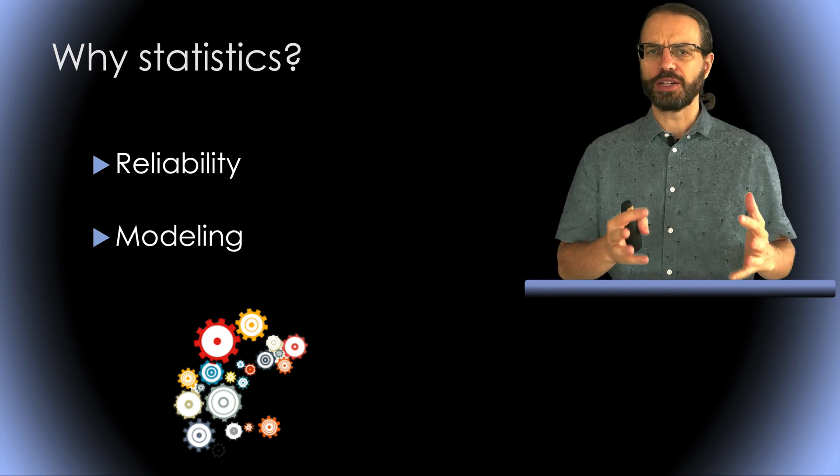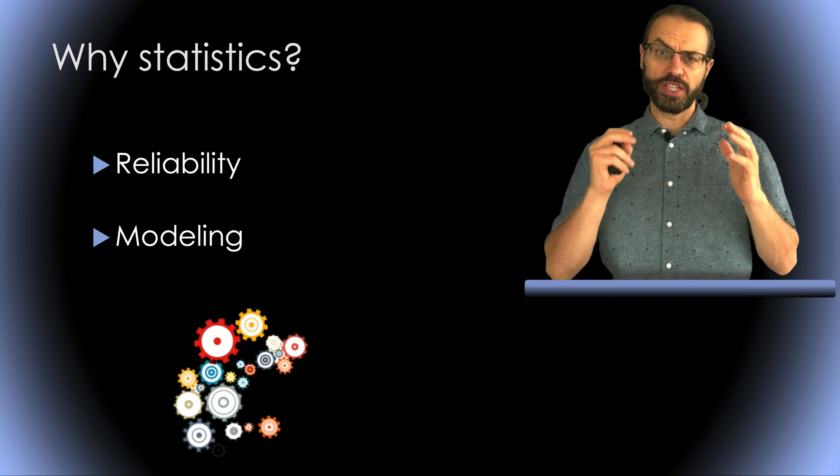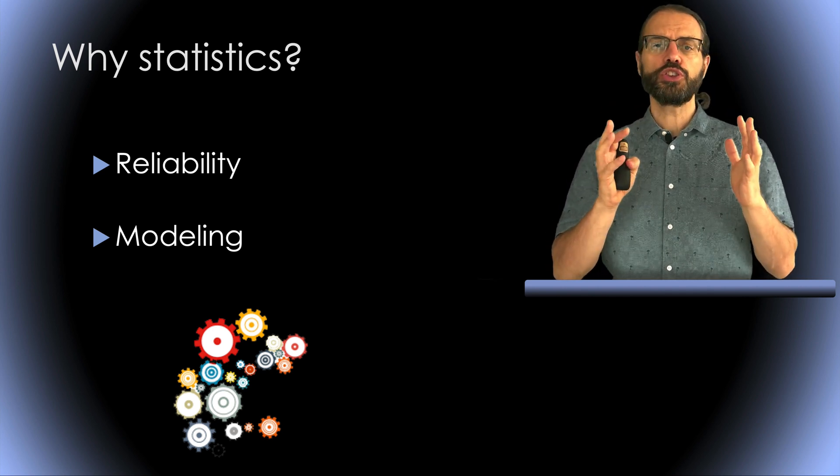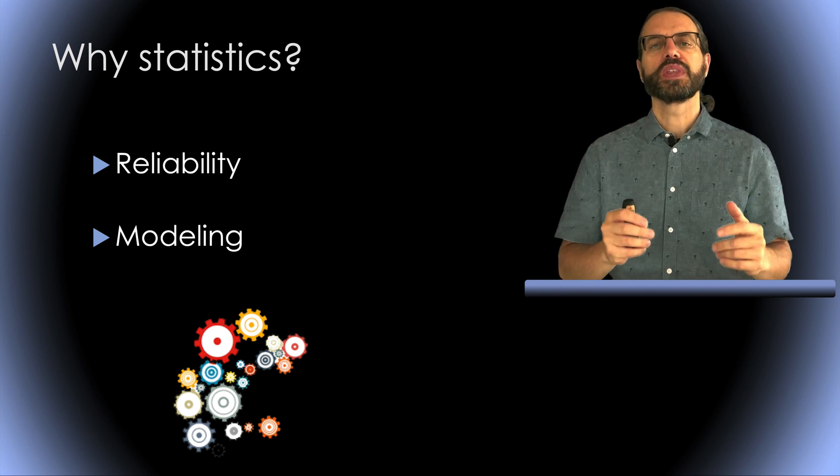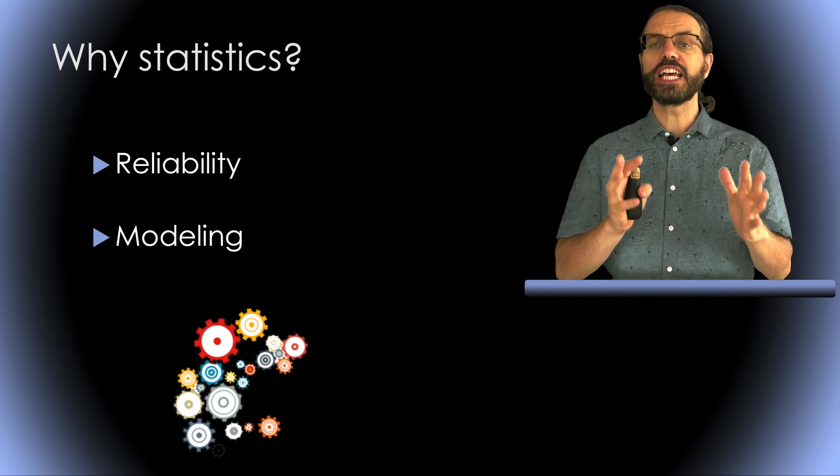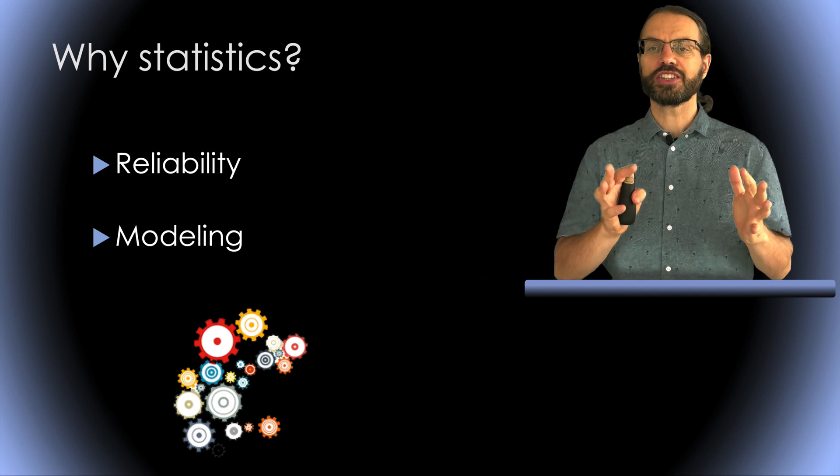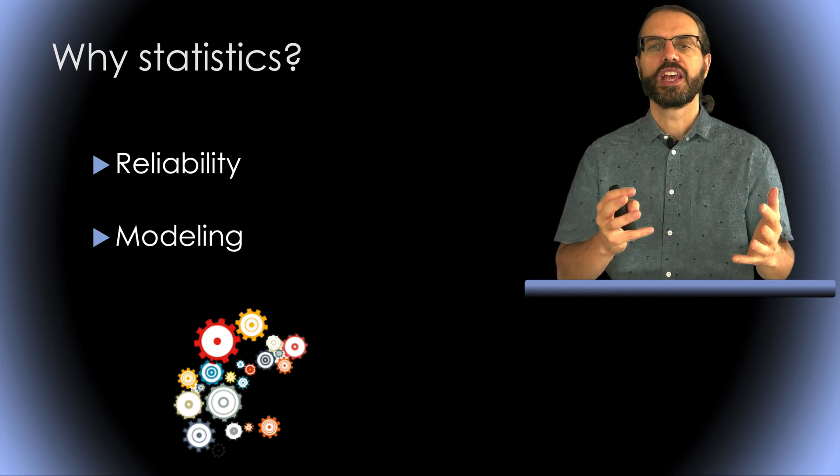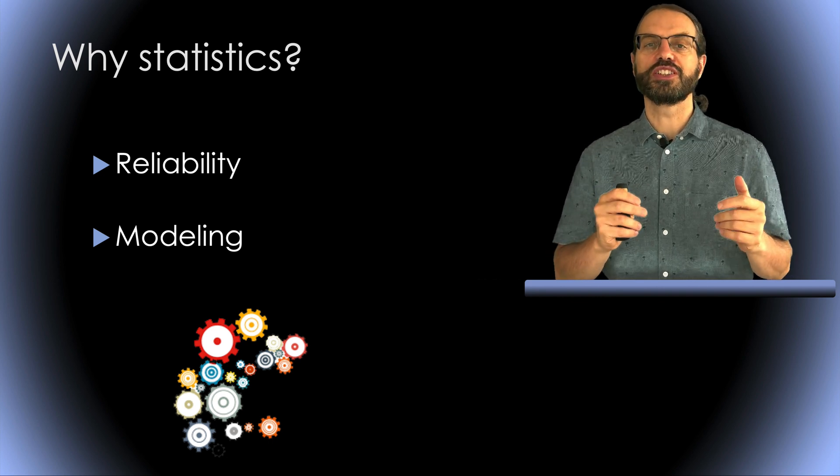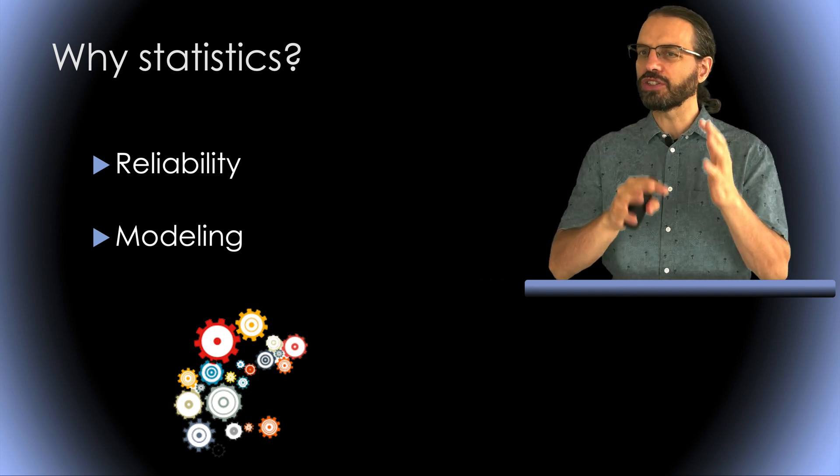So why do we do statistics? There are two key aspects to statistics. First, once you find that great feature in your EEG data, you want to know if it is reliable and reproducible. Statistics can tell you the likelihood that this effect occurs by chance. If you want to test if dogs can talk and you see a dog talking, then you do not need statistics. However, statistics is especially important for EEG, which is a very noisy signal. The effects can appear due to random fluctuations in that signal.